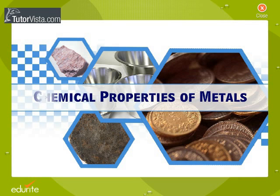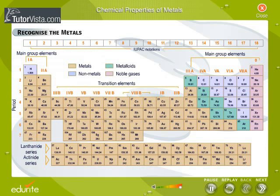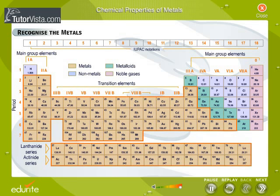Chemical properties of metals. All elements discovered by man have been systematically organized into a tabular format called the periodic table. Most of these elements are metals.